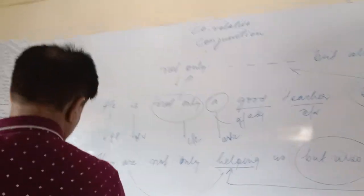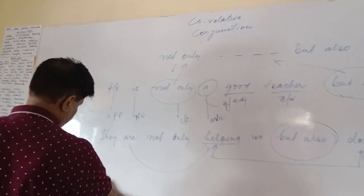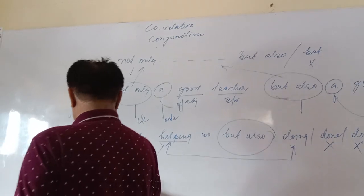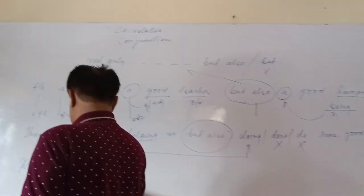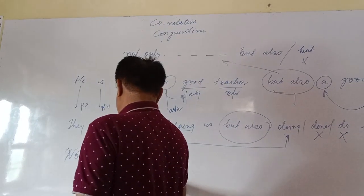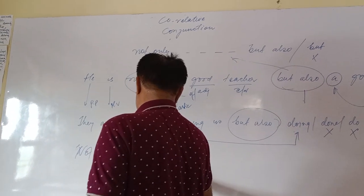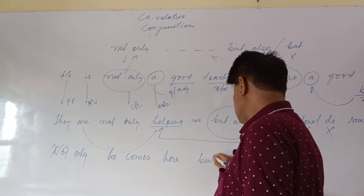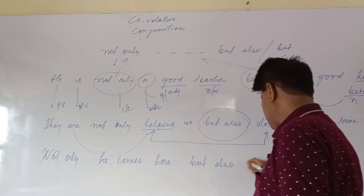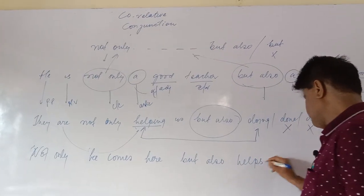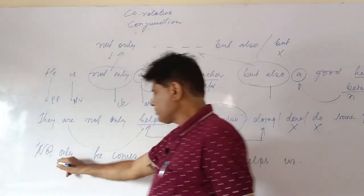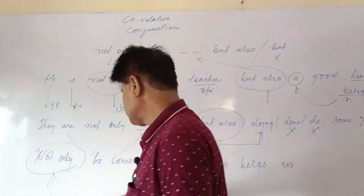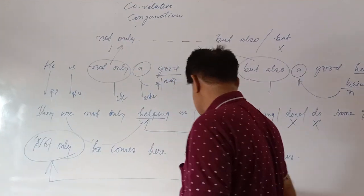Now let me take an inversion. Not only he comes here but also helps us. Remember, once you start with the inversion like 'not only' as conjunction, it will be followed by 'but also'.